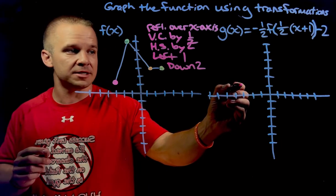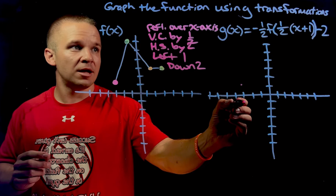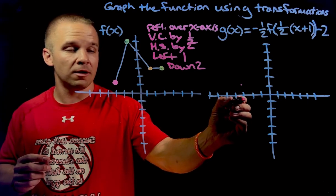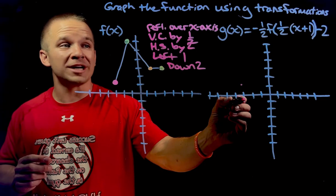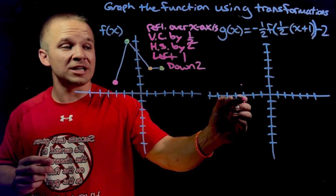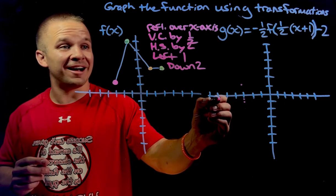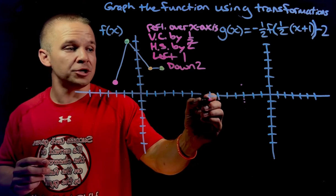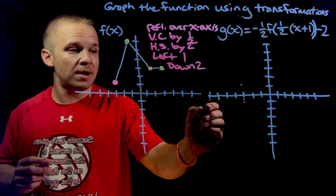I'm going to reflect over the x-axis. That puts me right down. Then I got to do a vertical compression by one half, which puts me here. Then I got to do a horizontal stretch by two. Well, currently my x value is negative three, so then it's going to become negative six. Then left one, boom, and then down two.